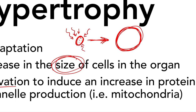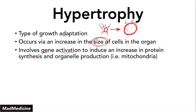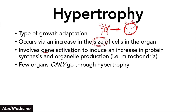The cell grows in size, but if it didn't go through gene activation to increase protein synthesis and organelle production, the cell would only be partially filled — the rest of the space would be empty. So the body induces gene activation and protein synthesis to allow for organelle production to occur, enabling the cell to handle that stress. You essentially fill up all the extra space with additional organelles. Very few organs actually undergo only hypertrophy — that's very important to remember.